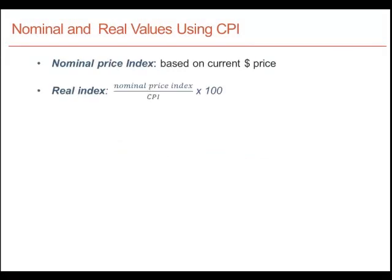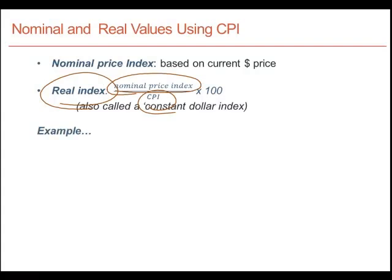So, what use is the consumer price index? If we are interested in the behavior of the price of a particular good or service, having a CPI tells us whether that good has increased in price by relatively more than prices in general. If we want a real index or real price for a particular good, we look at how its price has changed relative to the average of all prices — that is, we divide the nominal price index by the consumer price index. This is also called a constant dollar index.